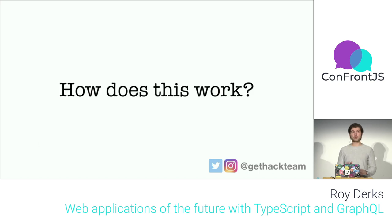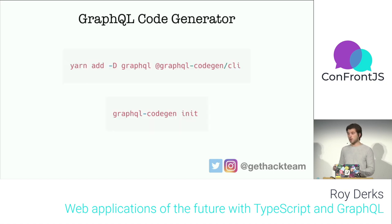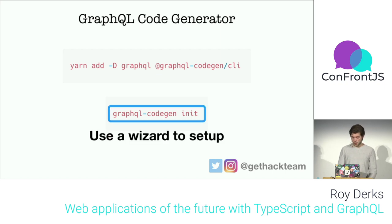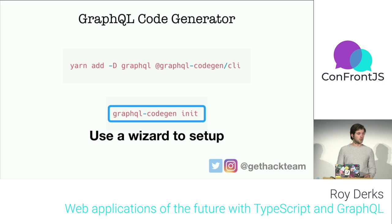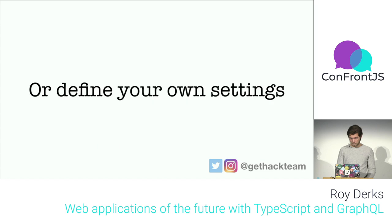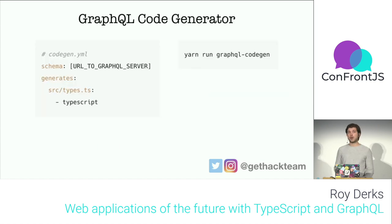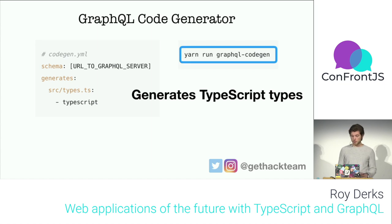GraphQL Code Generator is installed from NPM. Running the commands for GraphQL and the GraphQL Code Gen CLI lets you run a wizard to set it up. You need a GraphQL API and a TypeScript front-end or back-end application. You can also skip the wizard and manually create a codegen YAML file to define more advanced settings.